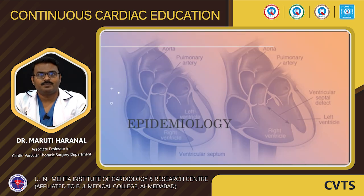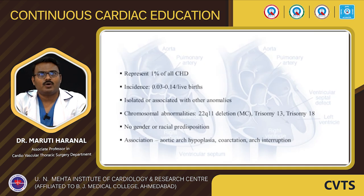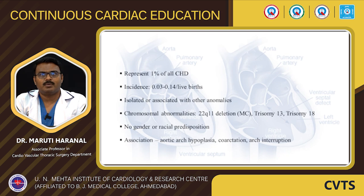Looking into the epidemiology: DORV represents around 1% of all congenital heart diseases, with an incidence of 0.03 to 1.14 per live birth. It can occur in isolation or may be associated with other anomalies. Chromosomal abnormalities such as 22q11 deletion, Trisomy 13, and Trisomy 18 are associated with DORV. There is no gender or racial predisposition. Association of aortic arch anomalies — coarctation and arch interruptions — are seen in DORV, especially with the Taussig-Bing variant.